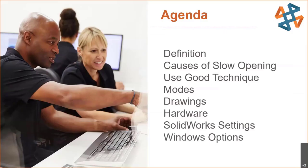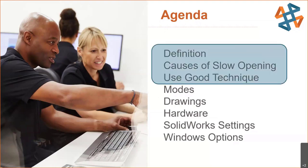Let's talk about what we're going to be covering today topic-wise. Large assemblies is something that comes up time and time again, so there's a lot of material on it. For today, we're going to stay focused and keep it to a short time span. The agenda will cover what is a large assembly, the causes of slow opening, slower rebuild times, performance issues in general, and using good technique.